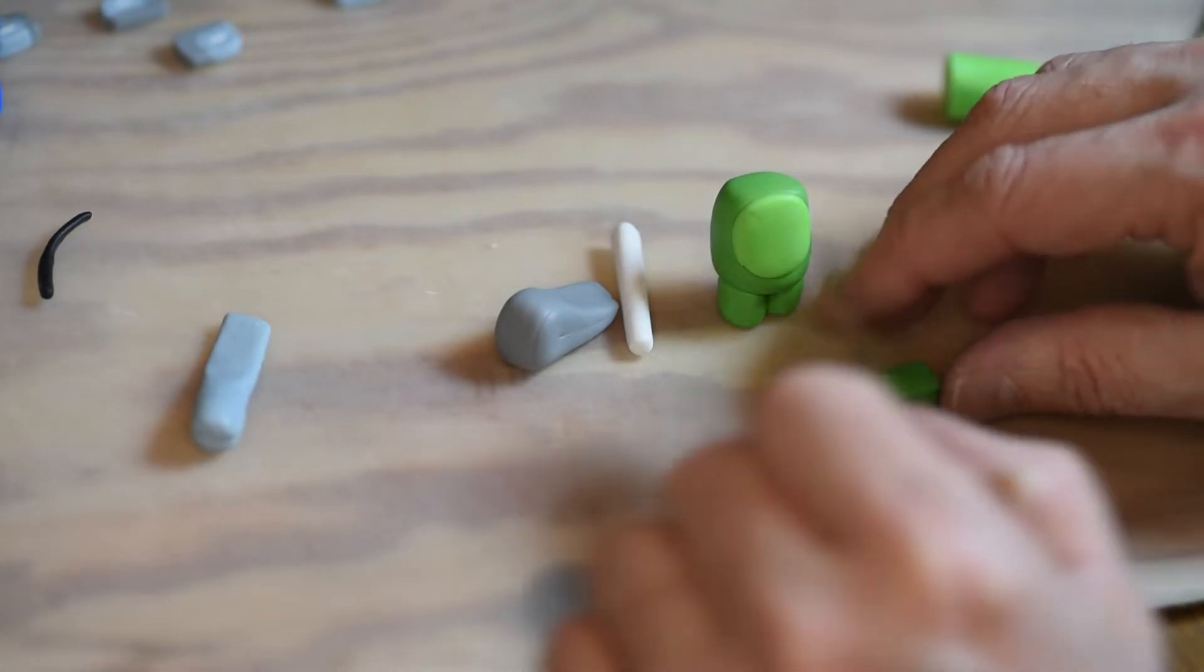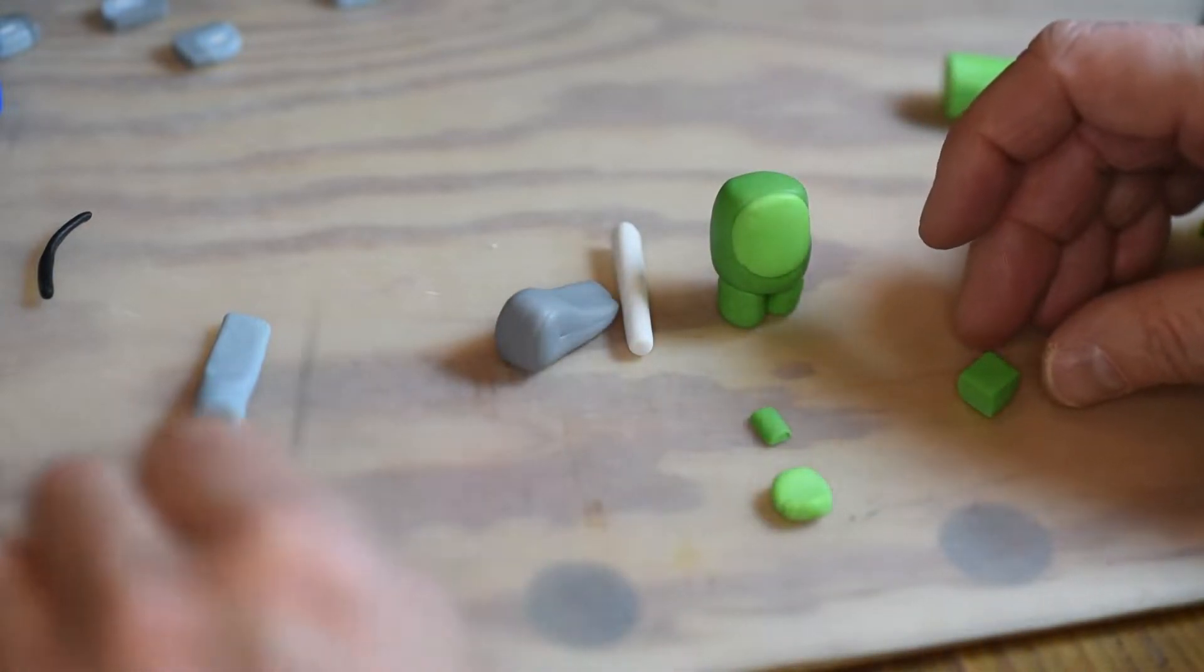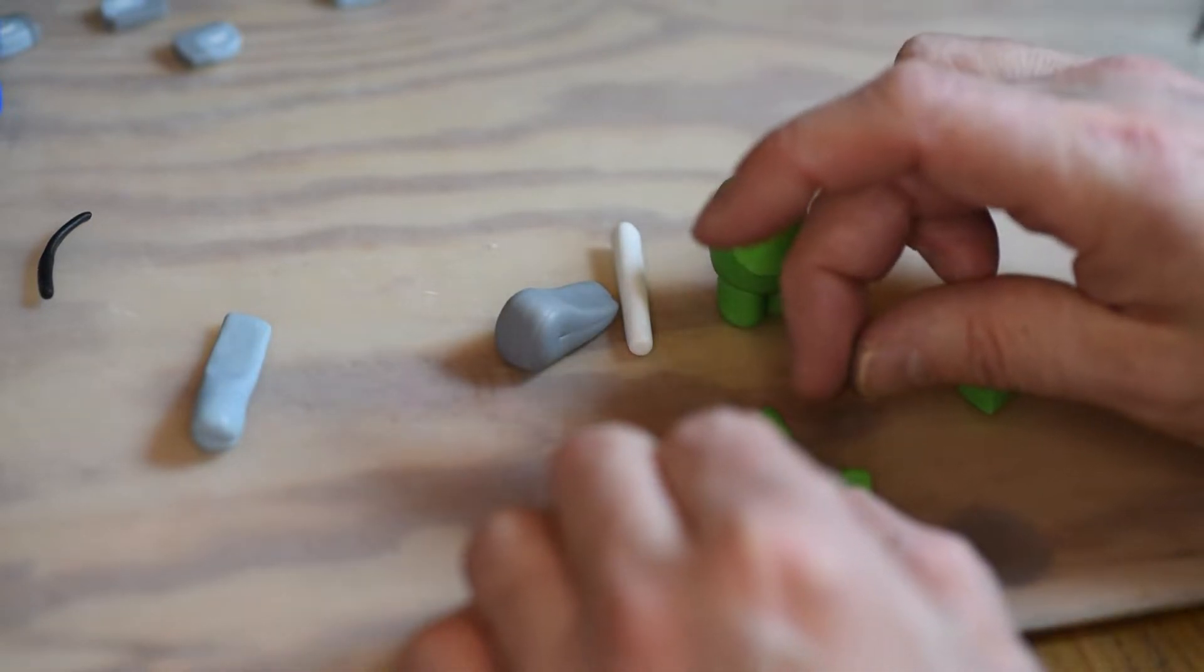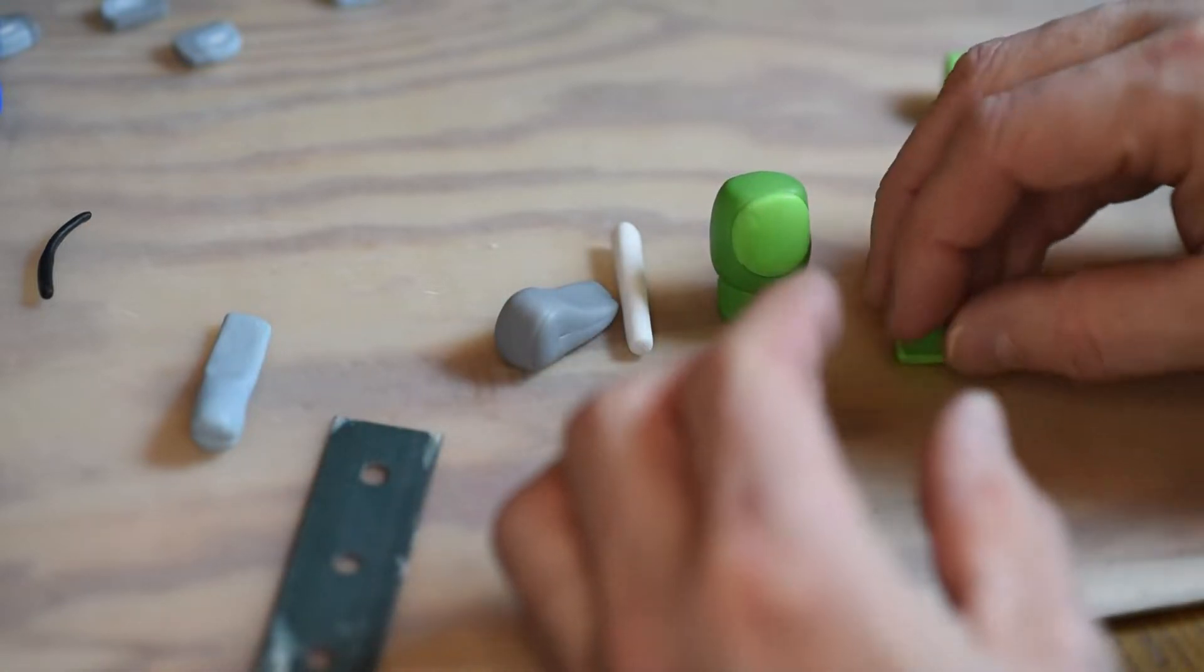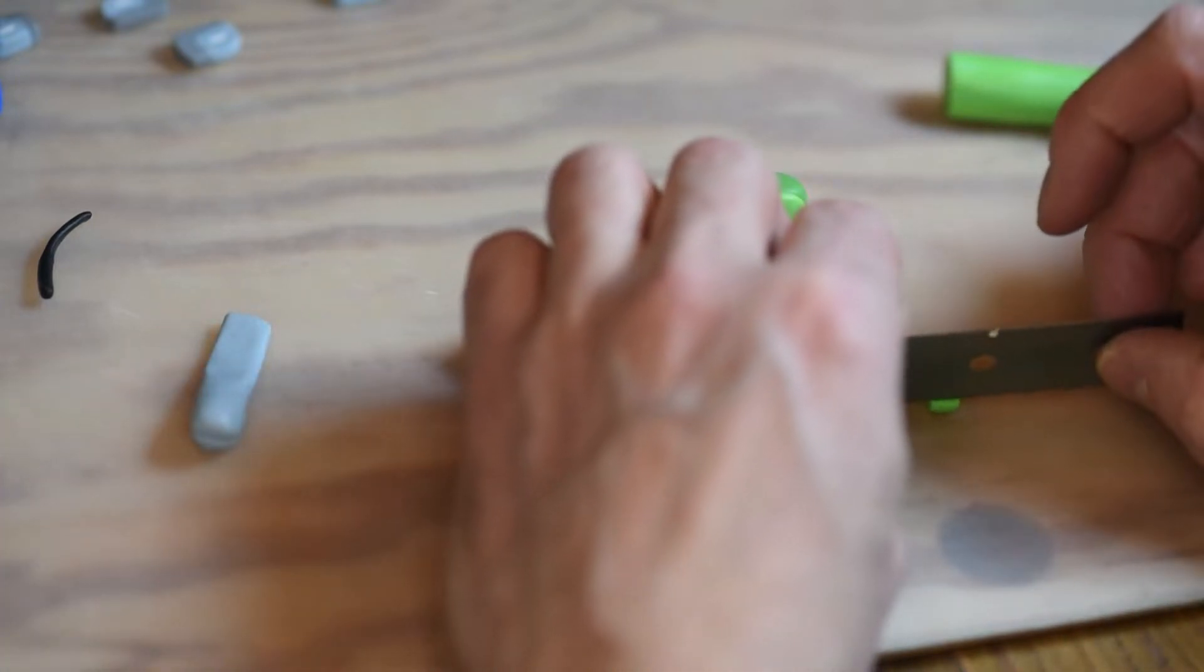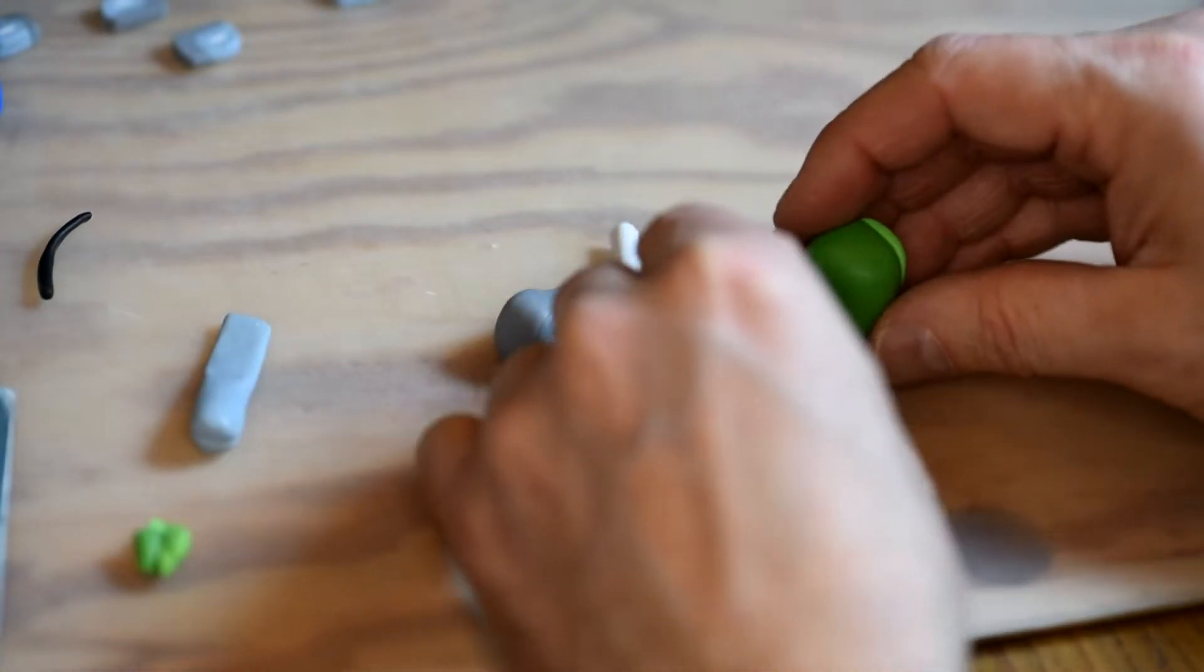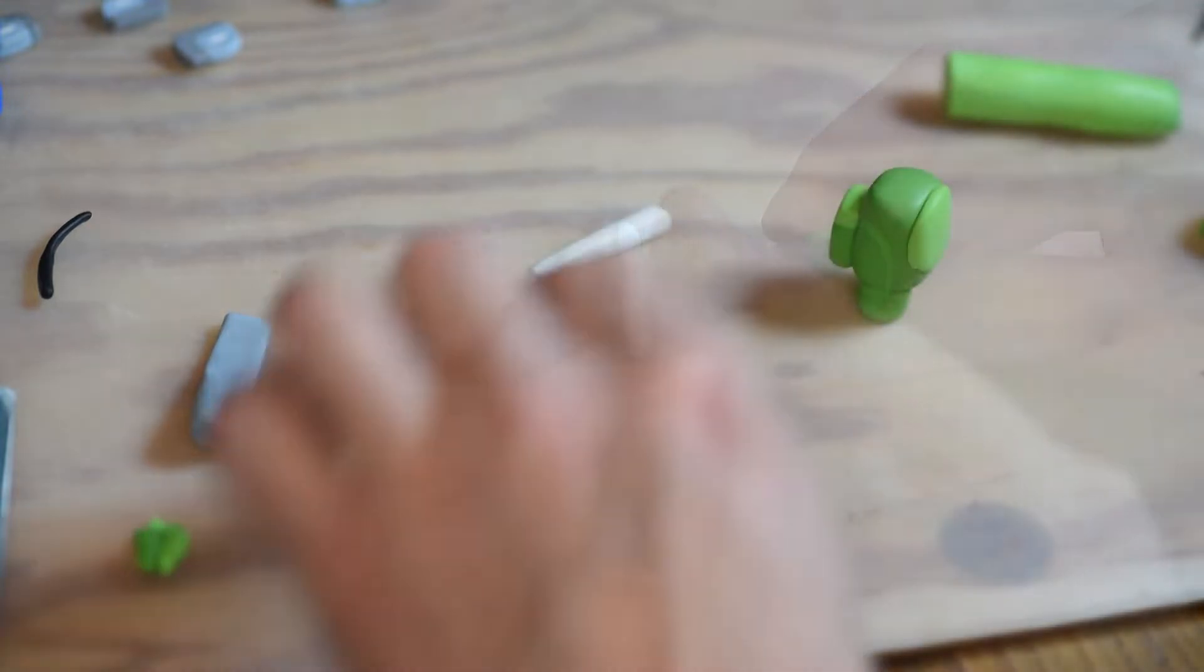Now for the backpack. I cut it to get a square and then use a little bit of the lighter green to get the right effect. Put them together and cut away all the extra material. Squeeze a little to get them to stick together. And now let's put the backpack on the back.